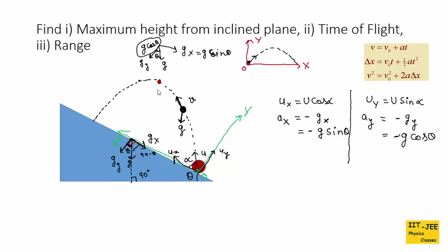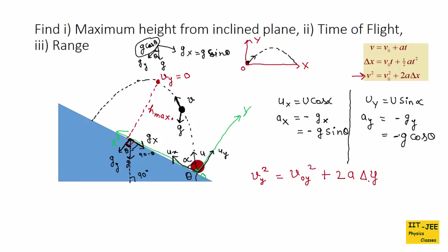Now we have to find the maximum height from the inclined plane. The maximum height is the vertical displacement when the projectile is at the top of its path. For maximum height, the vertical component of velocity goes to zero: vy = 0. Using the third kinematic equation in the vertical direction: vy² = v0y² + 2ay·Δy. Plugging in: 0 = (u sin alpha)² + 2(-g cos theta)·Δy.